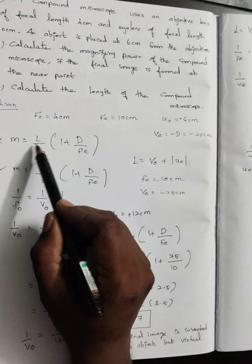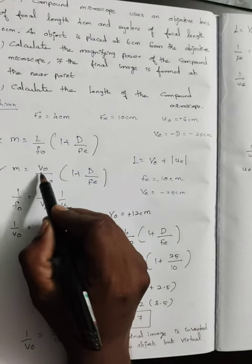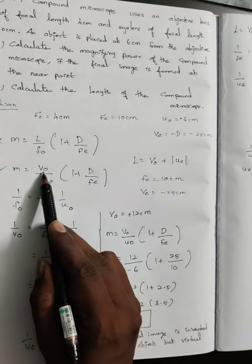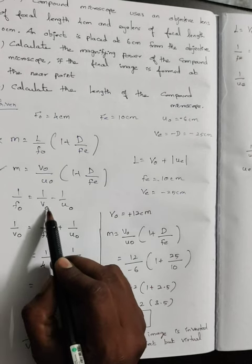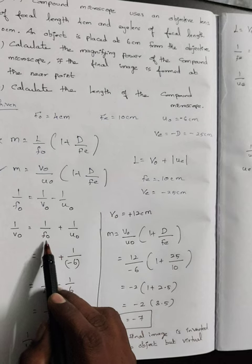When I take the second formula, I don't have V0, so I find V0 using lens formula: 1 by F0 equals 1 by V0 minus 1 by U0. Rearranging for V0 and substituting F0 and U0 values, with U0 as minus 6 due to sign convention.